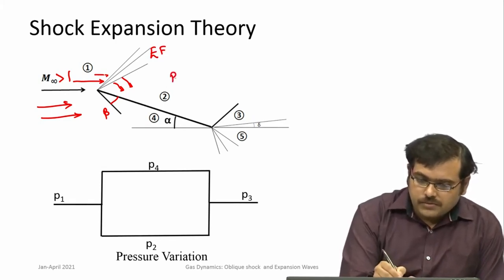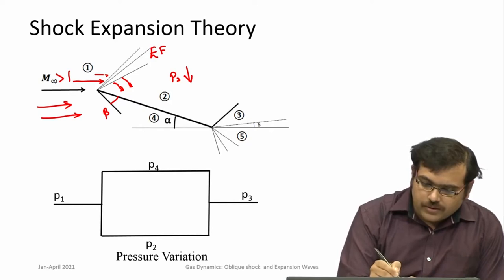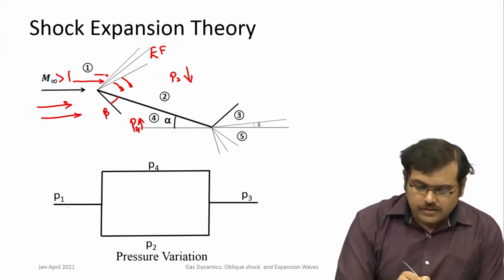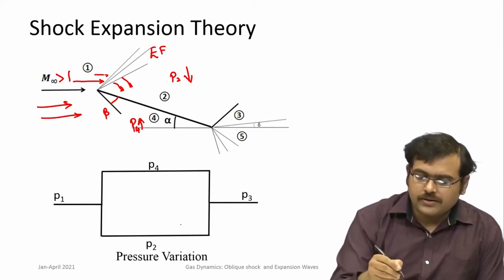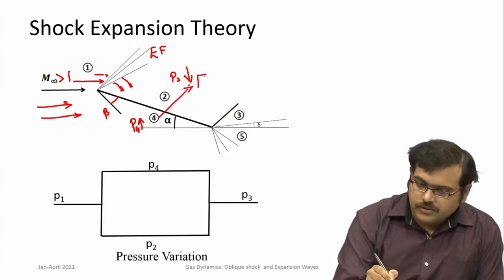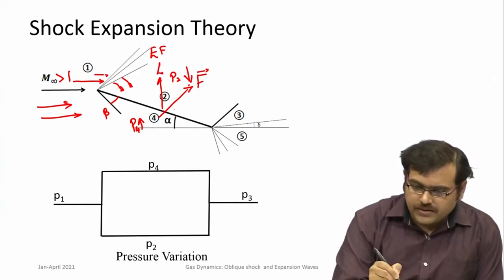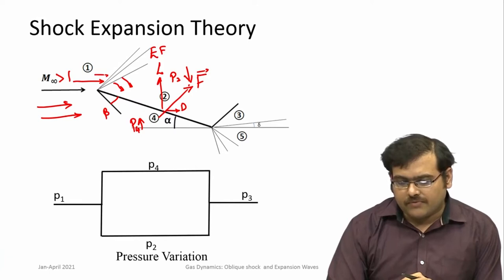Pressure on the top surface P2 decreases because of these expansions, while the shock compresses and P4 in that region increases. If you plot schematically the pressures, P4 is higher and P2 is lower. As a consequence you get a force which can be decomposed into the lift and drag forces — the lift force here and the drag force, much smaller, here.